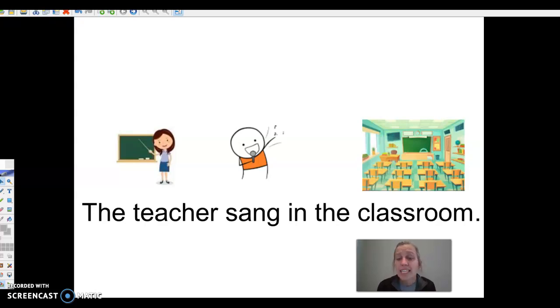Okay, now I want us to look at a sentence and see if we can identify the nouns and verbs in that sentence. This sentence here, "The teacher sang in the classroom," we have a picture of the teacher, we have a picture of singing, and we have a picture of a classroom. Now I know that a noun is a person, place, or thing.